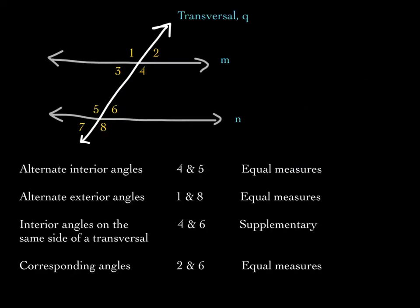We have alternate interior angles — four and five are examples. When you hear the word 'alternate,' think opposite sides of the transversal. 'Interior' means they are within the parallel lines, between line M and line N. Alternate interior angles have the same measure.